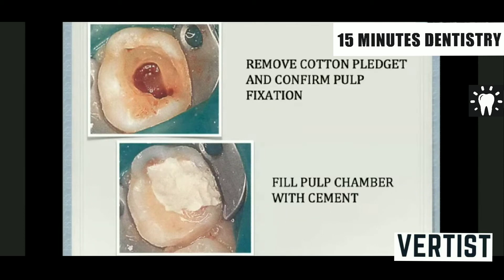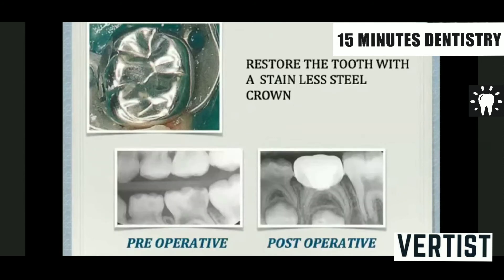After fixation, the pulp chamber is filled with cement — reinforced zinc oxide eugenol or glass ionomer cement. Then permanent restoration of the tooth is done with a stainless steel crown, which provides the best coronal seal for primary teeth. Pre-operative and post-operative radiographs are taken to confirm the pulpotomy and stainless steel crown placement.